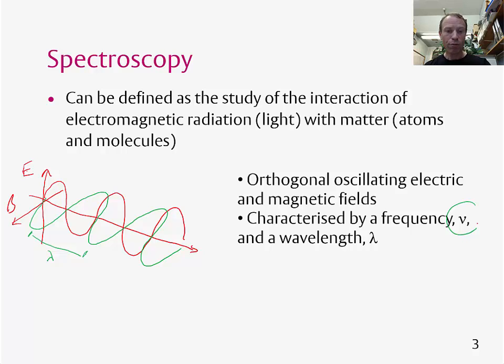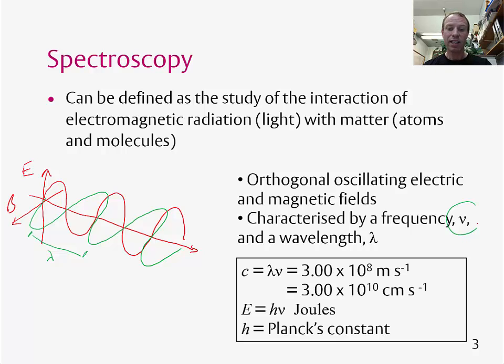The wavelength and the frequency of light are related. If you take the wavelength and multiply it by the frequency, it gives you the speed of light c. So in SI units, this is approximately 3 times 10 to the 8 metres per second. In spectroscopy, we'll often use the speed of light in non-SI units, 3 times 10 to the 10 centimetres per second.